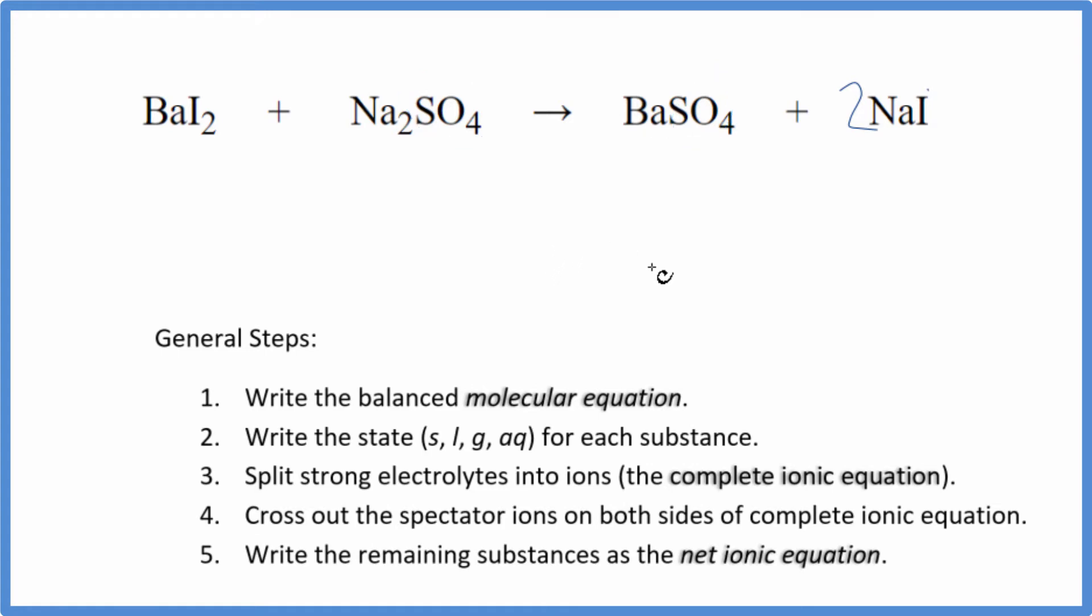That's the balanced molecular equation. Now we need to write the state for each substance. If you know your solubility rules, compounds with iodine in general are soluble. So we're going to put an AQ. It's going to be aqueous, dissolve, and dissociate into its ions.